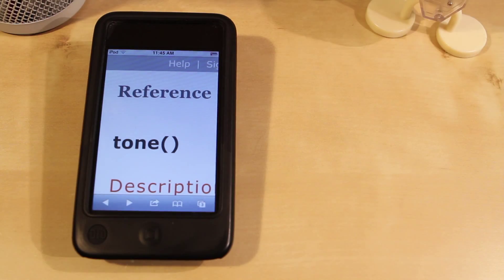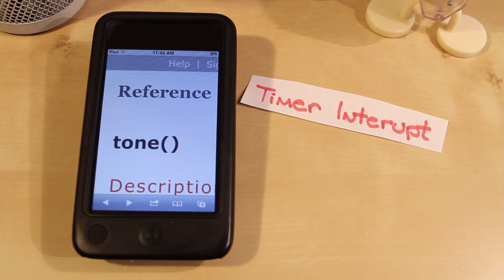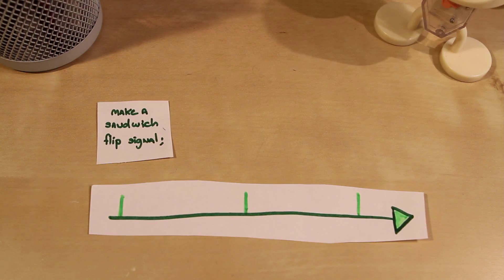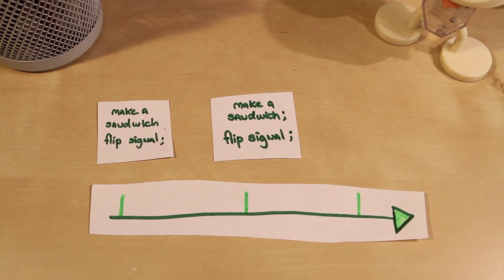Here's a rough idea. The tone library uses something called timer interrupts. Timer interrupts are a way to have the Arduino do a specific group of tasks at regular intervals of time.